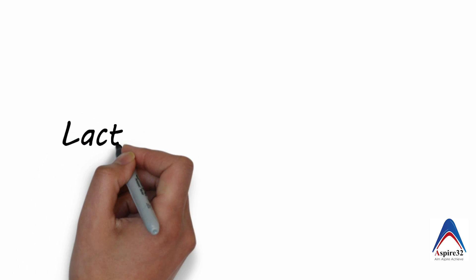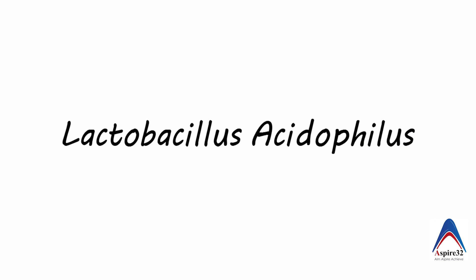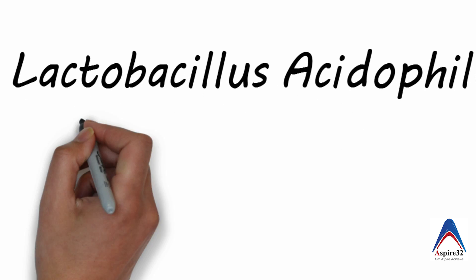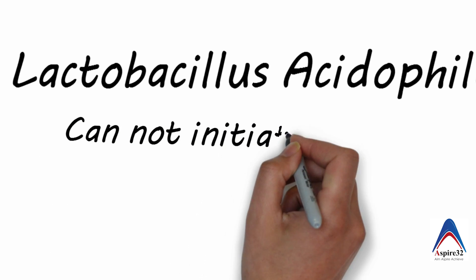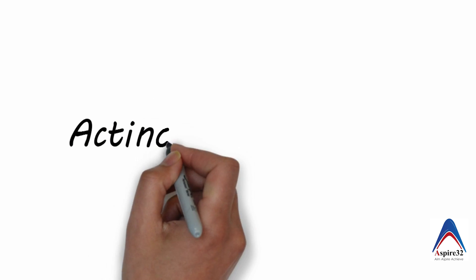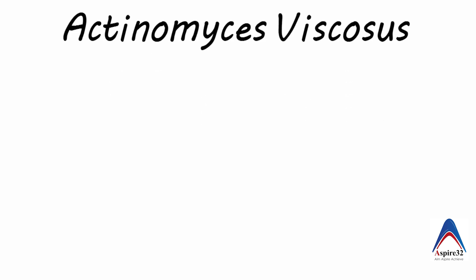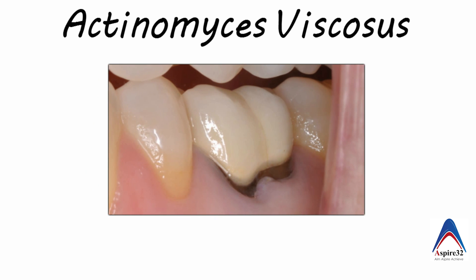The second organism is Lactobacillus acidophilus. It is Streptococcus mutans which initiates the caries; Lactobacillus is only involved in the progression of caries. So if asked about caries initiation, the answer is Streptococcus mutans, and if caries progression is asked, the answer is Lactobacillus acidophilus. The third organism is Actinomyces viscosus, which has a special role in root caries formation. The organism involved in root caries formation is Actinomyces viscosus.